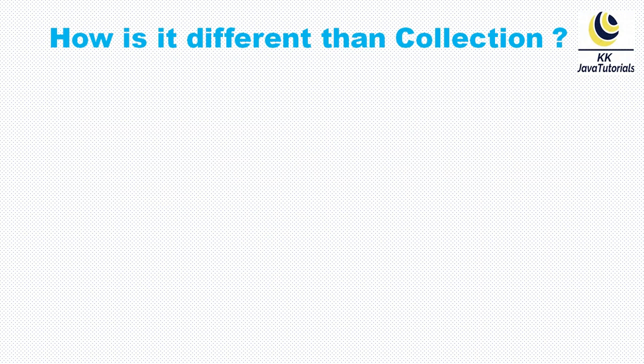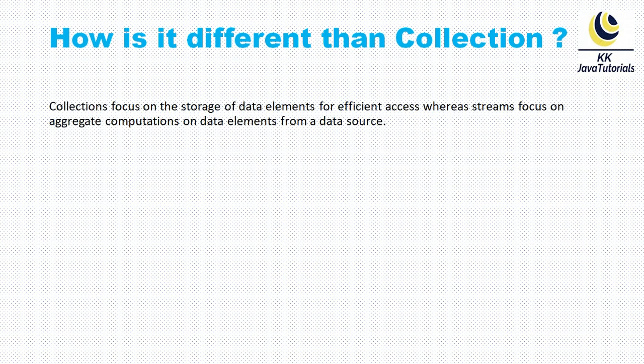How is it different than a collection? Collection focuses on the storage of data elements for efficient access, whereas streams focus on aggregate computations on data elements from a data source. Wherever you need a kind of aggregate operation on a huge amount of data — if you have a data source that is really huge and you want to perform aggregate operations — then you really need a Stream API.